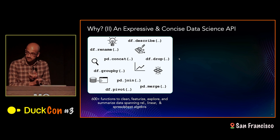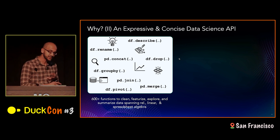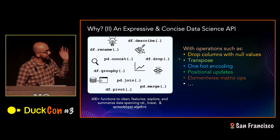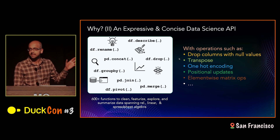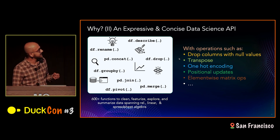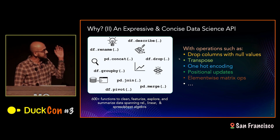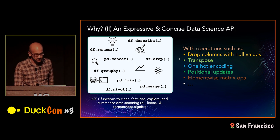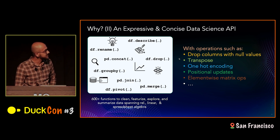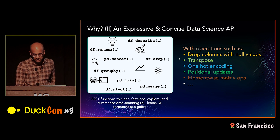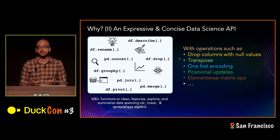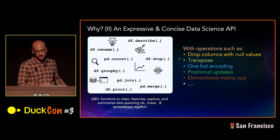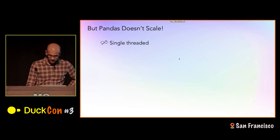The second reason why pandas is so great for data science is that it has a very rich body of functions that let you do pretty much whatever you want to your data — featurize it, clean it, transform it, summarize it, et cetera. It draws on not just relational algebra, but also linear algebra and spreadsheet functions. You have operations that you wouldn't normally think to do in SQL, like dropping columns that have a certain fraction of null values, transposes, one-hot encoding, updating based on position — lots of stuff very common in data science but very hard to do from a SQL context.